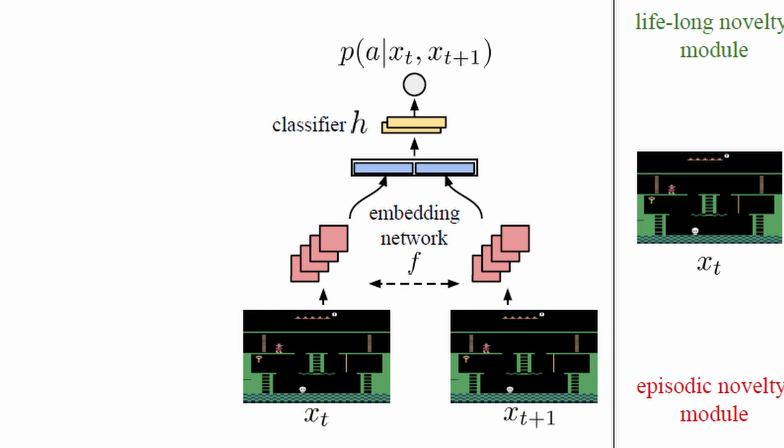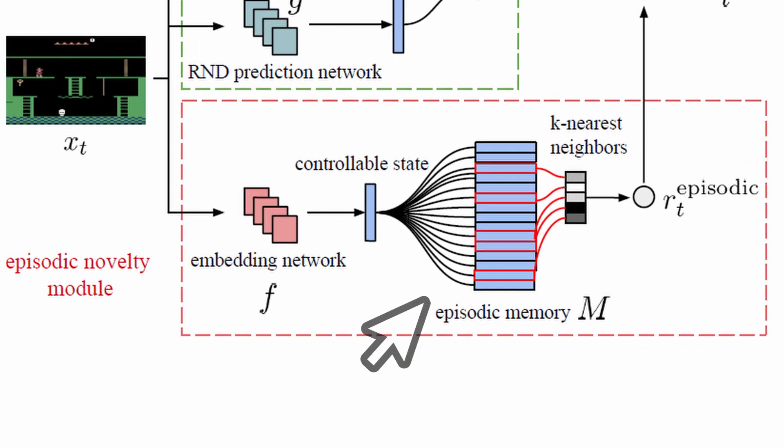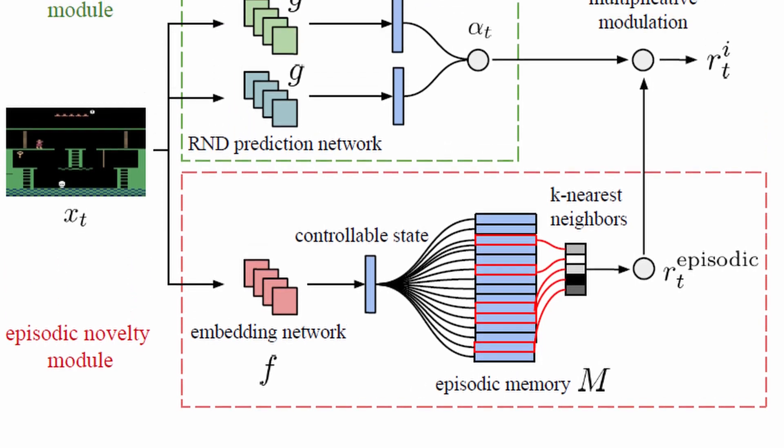The embedding produced by the embedding network that you see in blue is also called controllable state and is indeed the embedding that is stored in the memory buffer. Let's now turn our focus on the lifelong module.